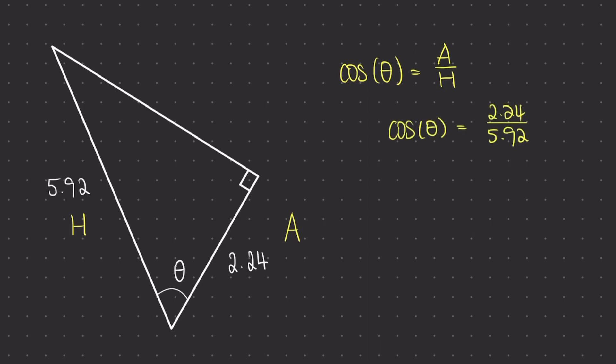At this stage remember we have to do the inverse of cos on both sides of the equation. On the left hand side that will simplify down to just theta, and on the right hand side I will have the inverse cos of 2.24 over 5.92.